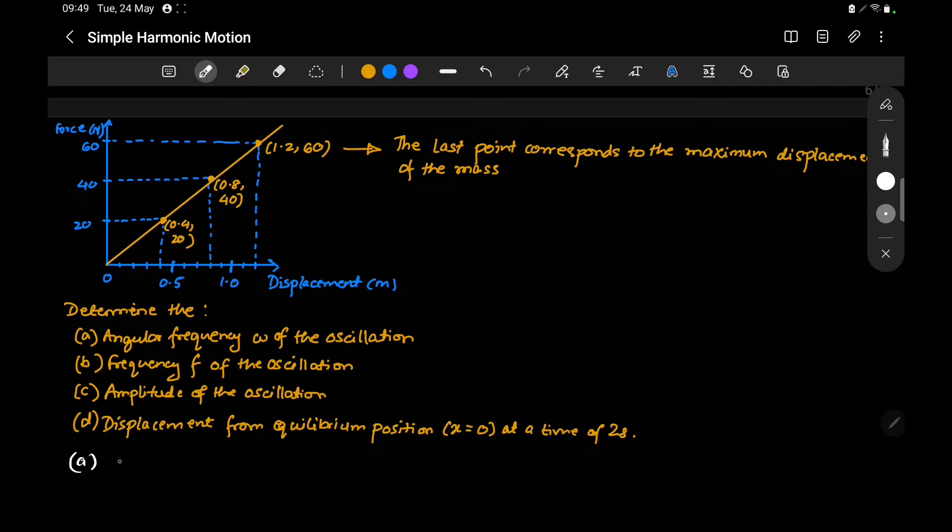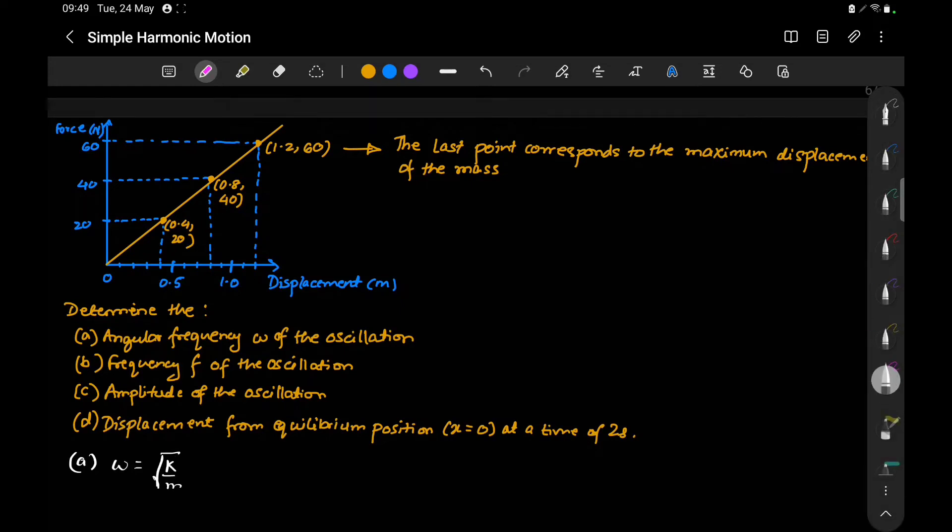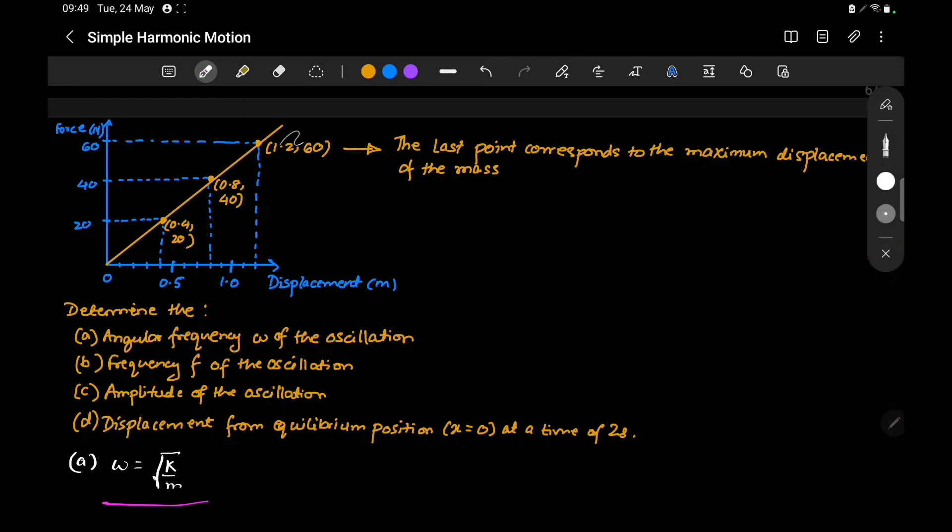Angular frequency is ω = √(k/m). We're given the mass in the question. We need to find k, which can be found from this graph. The graph is F versus x, so slope of this graph will be k.